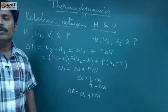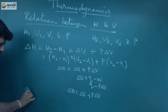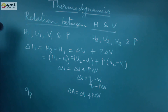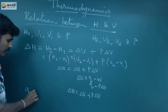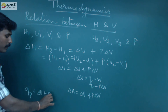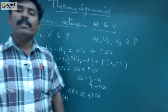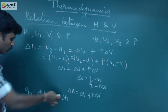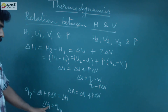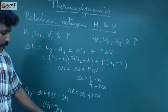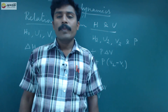So ΔH is equal to ΔU plus PΔV, which equals Qp. At constant pressure, heat is absorbed by the system. Therefore ΔH equals Qp — meaning the change in enthalpy equals the heat absorbed at constant pressure.